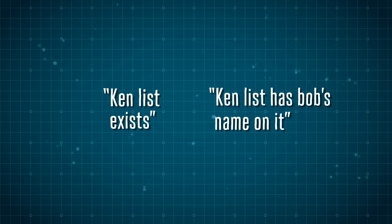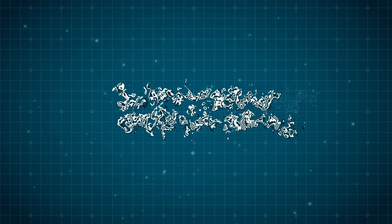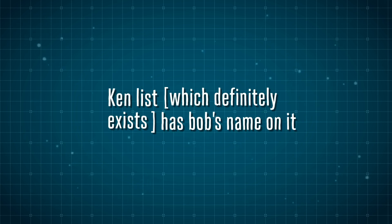So if we say Ken's list exists, and we say Ken's list has Bob's name on it, we can combine the two propositions together to get a new proposition that says Ken's list, which definitely exists, has Bob's name on it. That solves our problem with Joe's list, because Joe's list doesn't exist.